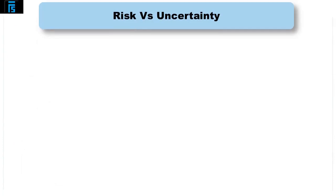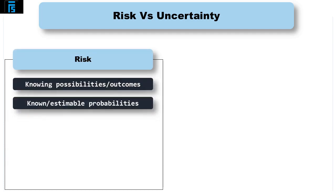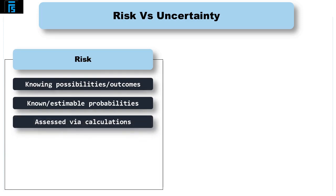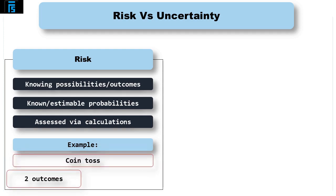First of all, let's distinguish between risk and uncertainty. Risk concerns known possibilities or outcomes, and known or estimable probabilities. The benefit is that we can therefore do some calculations to help us assess the risk. For example, the risk associated with tossing a coin — there are two possible outcomes, heads or tails, and a 50-50 chance of each.